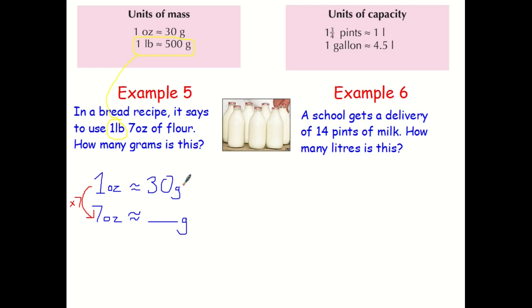And whatever I do to that side, I must do to the other. And I know that seven threes are 21. So therefore, seven lots of 30 must be 210. But I've got to remember that I'm doing one pound and seven ounces. So I'm going to bring in my 500 grams, which is there at the top, because that was one pound, and add my seven ounces here. And I get an answer of 710 grams. So that's how many grams one ounce and seven, one pound, sorry, and seven ounces is.